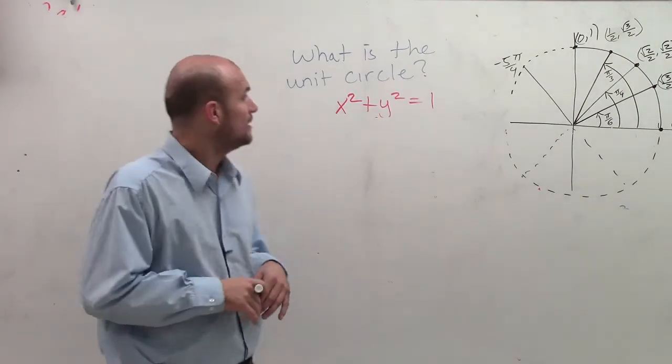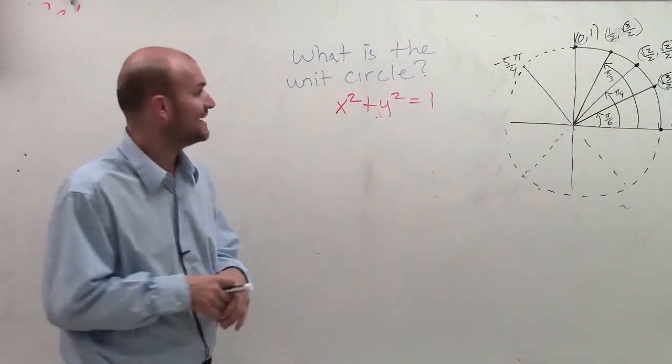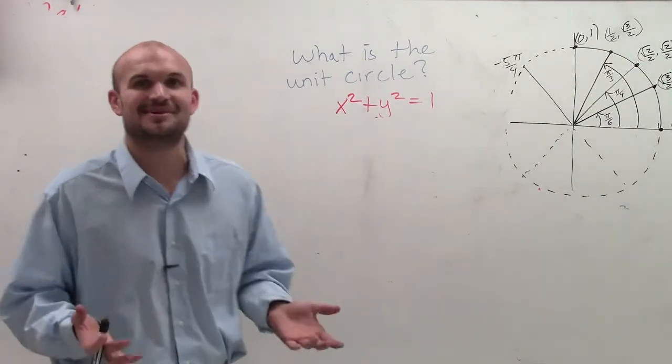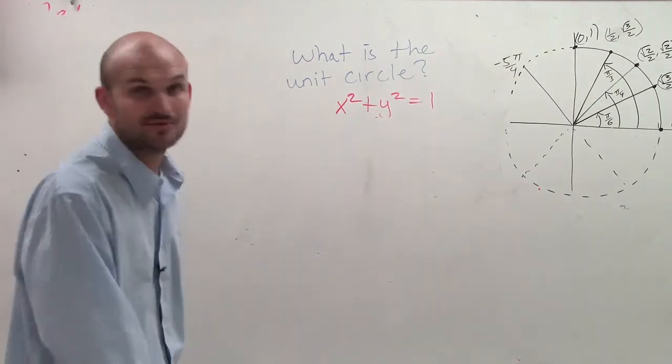What is a unit circle? A unit circle is pretty much a circle given the equation x squared plus y squared equals 1.